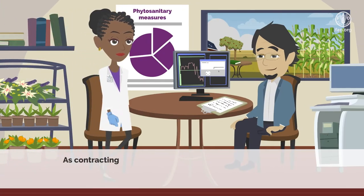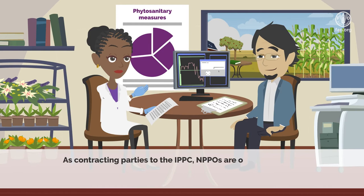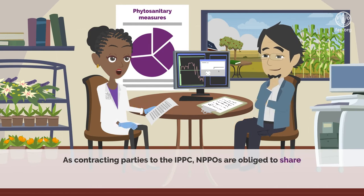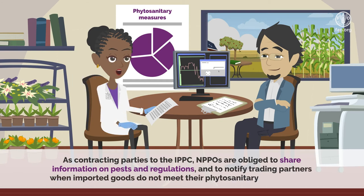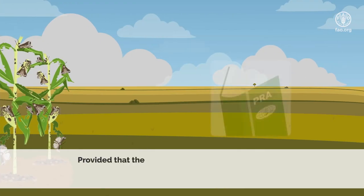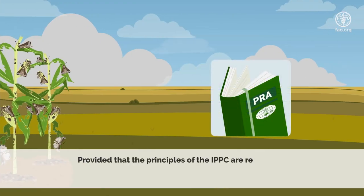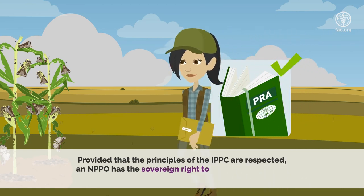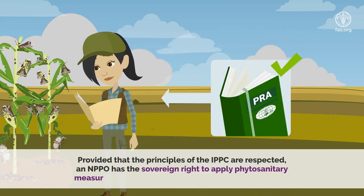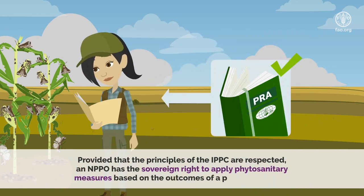As contracting parties to the International Plant Protection Convention, national plant protection organizations are obliged to share information on pests and regulations, and to notify trading partners when imported goods do not meet their phytosanitary requirements. Provided that the principles of the International Plant Protection Convention are respected, a national plant protection organization has the sovereign right to apply phytosanitary measures based on the outcomes of a pest risk analysis.